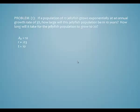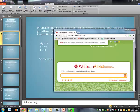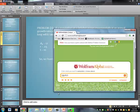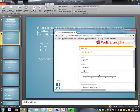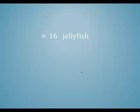For the first question, we're looking at the population 10 years down the road so t equals 10. Plugging those values into the formula, we have the new population equal to 12 times e raised to the 3 percent times 10 power. We can multiply 3 percent times 10 to get 30 percent, or 0.3. Using a calculator, 12 times e to the 0.3 power gives us approximately 16.19, so approximately 16 jellyfish 10 years down the road.